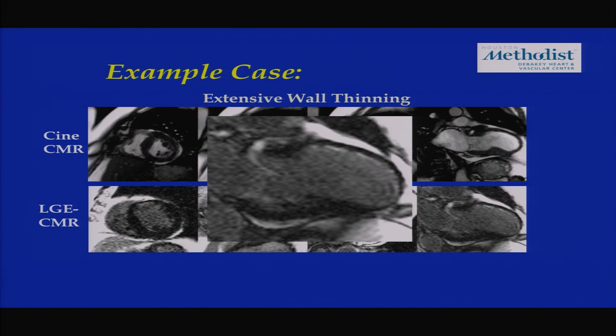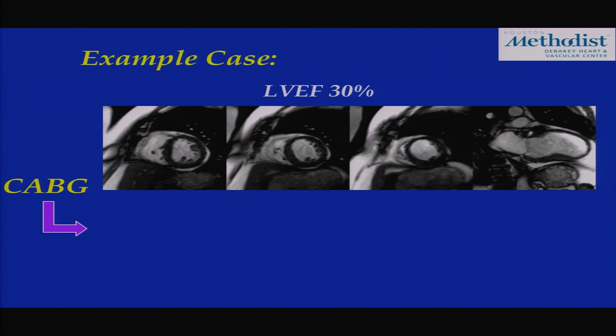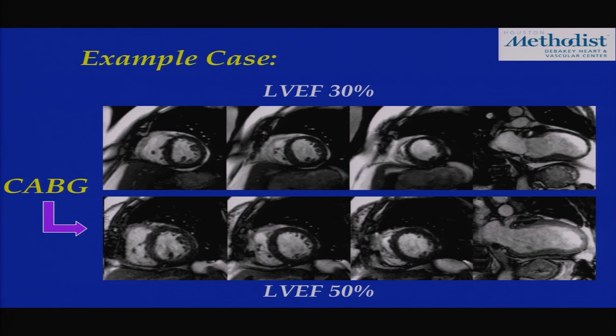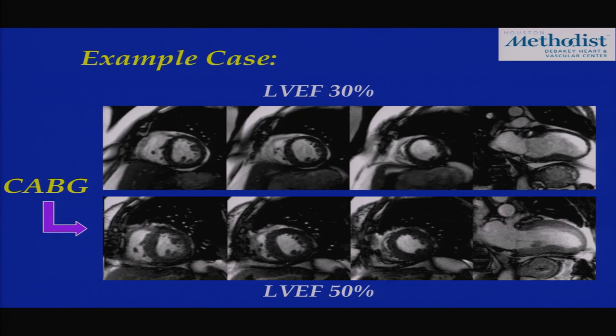On zoomed view, the scar hyper-enhancement is actually less than the amount of black or viable myocardium. So despite significant wall thinning, because there is very limited scar in this wall, we hypothesize this wall is viable and would improve contractility. Indeed, after LAD revascularization in this example, wall thickness improved, contractility improved, and overall ejection fraction went from 30% to 50% at three months after surgical revascularization.